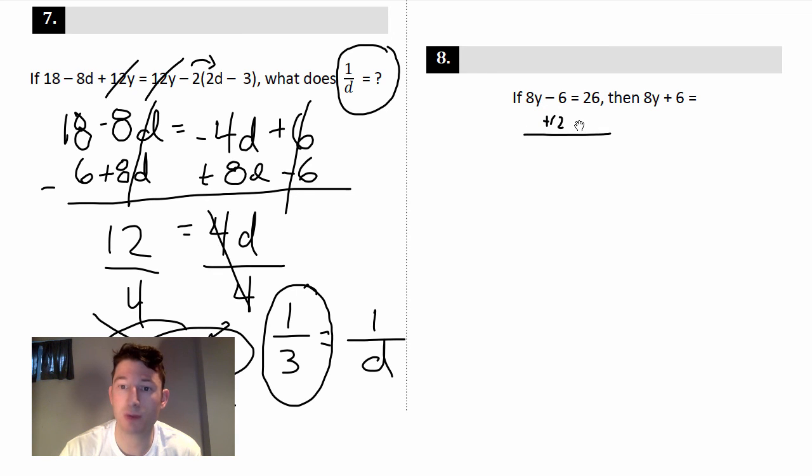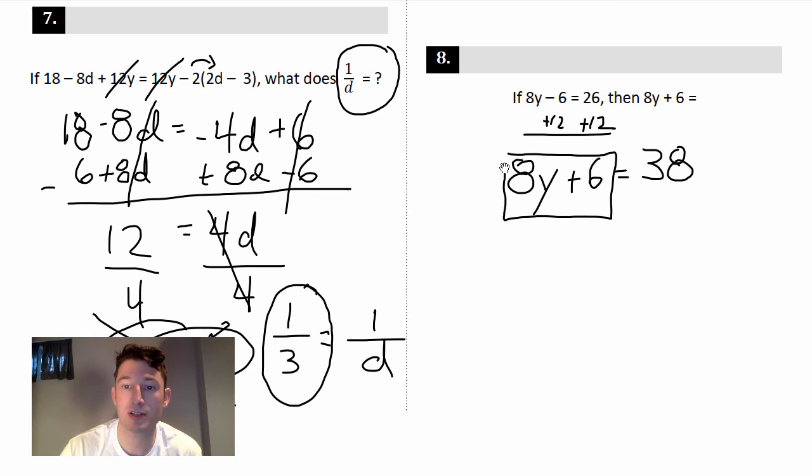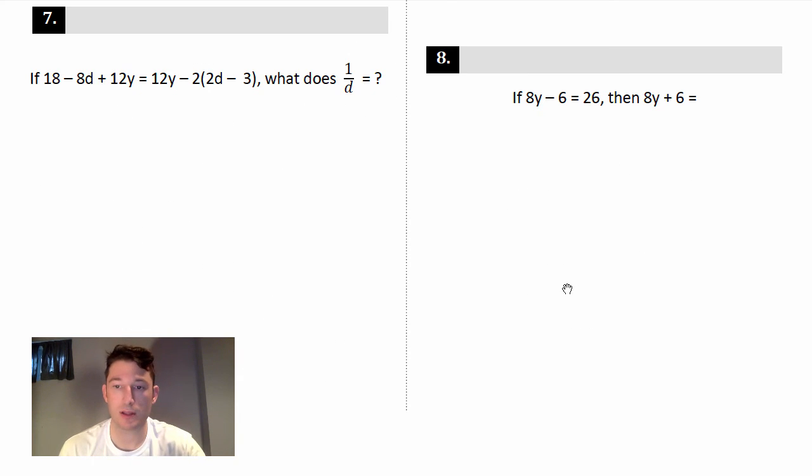Well then, that's 8y negative 6 + 12 is 6. 26 + 12 is 38. So that was the fast way of doing it, because now we have 8y + 6 and it's equal to 38. So 38 is your final answer. You're all done. Nice quick way of doing it. Let's keep going.